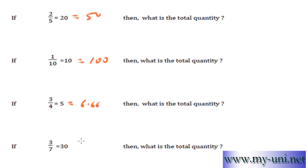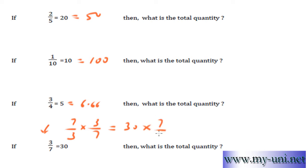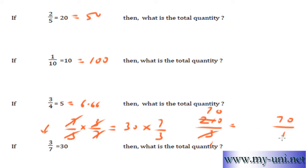3 sevenths of a certain quantity is 30. 3 sevenths is equal to 30. Then what is the whole quantity? Convert this side of the equation to a whole quantity — multiply it by the reciprocal fraction 7 over 3. And multiply the other side by 7 over 3 as well. These 7s will cancel out, the 3s will cancel out. 7 times 30 is 210 over 3: 3 times 70 is 210, so this is 70 over 1. And this side is already 1 over 1. So 1 over 1 is equal to 70 over 1, meaning 1 is equal to 70. The whole quantity is 70.